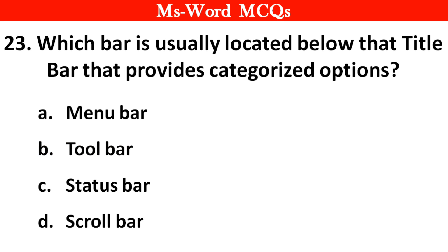Which bar is usually located below the title bar that provides categorized options? Options: A — Menu Bar, B — Toolbar, C — Status Bar, D — Scroll Bar. Right answer is option A — Menu Bar.